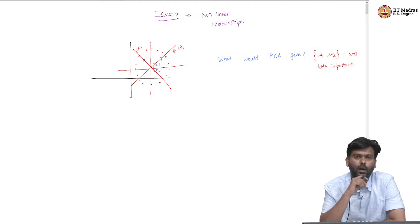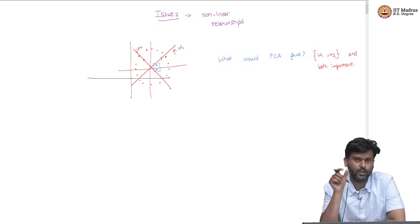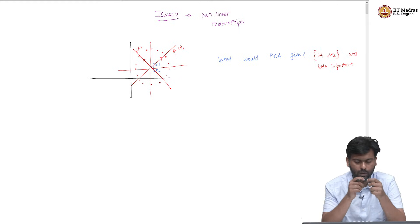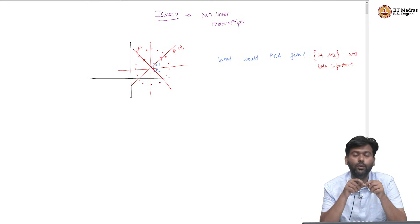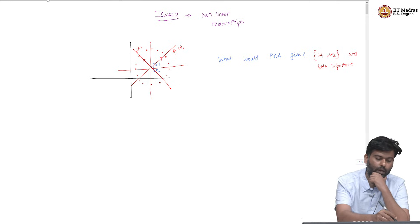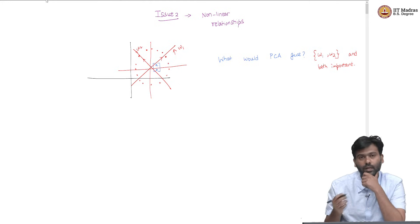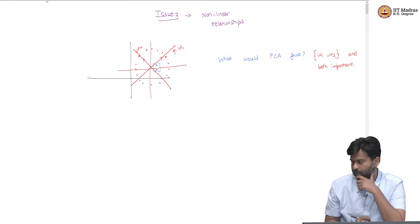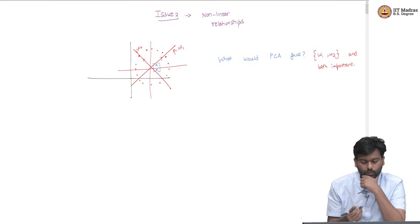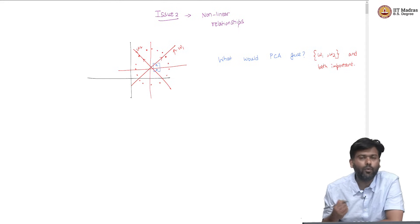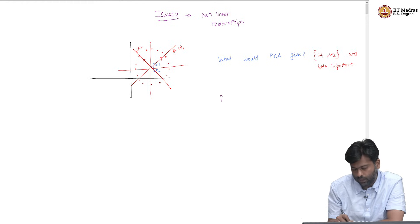But the real question is: do we really need two directions here? In other words, do we really need two numbers? Is the relationship such that you necessarily need to capture two directions, or is there a different way to capture this relationship? What is the real fundamental relationship among these data points? By the virtue of the fact that they lie around a circle, the following is true.